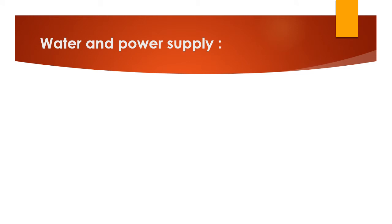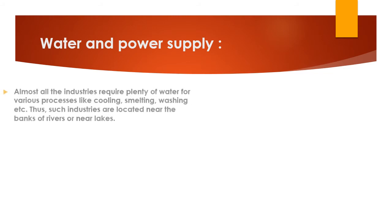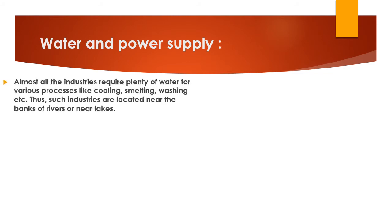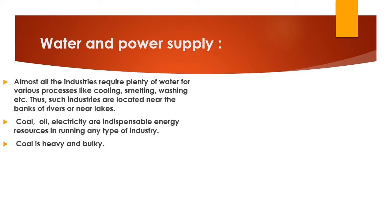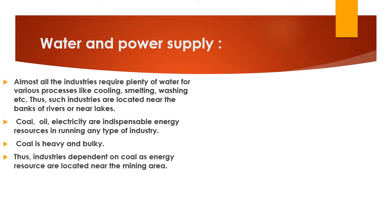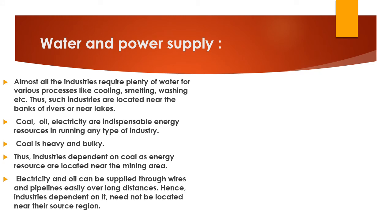Strawberries, for example, are very perishable and do not last more than two days. Because of that, industries dependent on fruits are also located where fruits are cultivated. The next physical factor is water and power supply. Water is essential for processes like cooling, smelting, and washing. Coal, oil, and electricity are indispensable energies that run industries. Since coal is heavy and bulky, other energy sources like electricity and oil — which can be supplied through wires and pipelines over long distances — are also used.